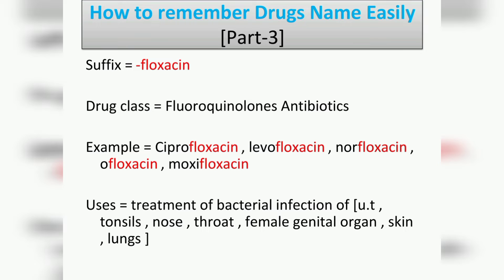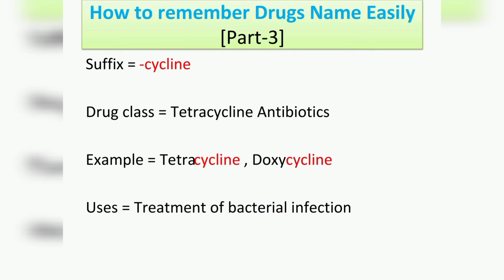The next suffix is '-floxacin', which belongs to the drug class fluoroquinolone antibiotics. Examples include ciprofloxacin, levofloxacin, norfloxacin, ofloxacin, and moxifloxacin. Their uses include treatment of bacterial infections of the urinary tract, tonsils, nose, throat, female genital organs, skin, and lungs.